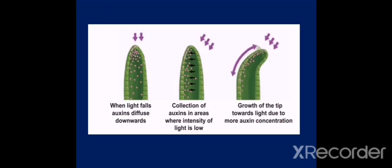In the first diagram, you can see that auxin is produced in the tip of the shoot apex. When light falls, auxins diffuse downwards. That is, auxin travels downwards. Collection of auxin in areas where intensity of light is low. So you can see that in the second diagram, light is falling into the right side. So auxins are collected into the left side. As auxins are collected in the left side, cell elongation increases in the left part. So that part shows a high growth rate than the right side. Therefore, we can observe that the plant is bending towards the sunlight.